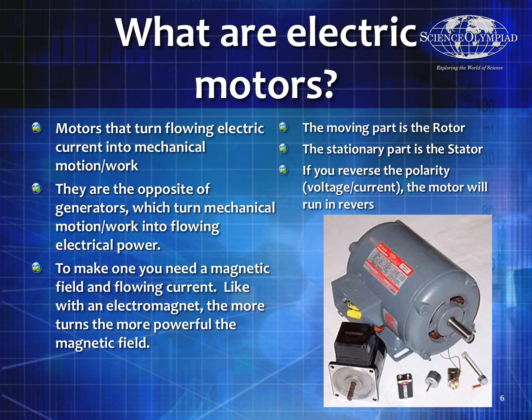Electric motors are pieces of equipment that turn electrical current into mechanical force or mechanical work. The current flowing around the internal solenoids creates a magnetic field, which then makes the stationary magnets push or pull the rotor and makes the rotor spin. The more current you provide, the faster the motor spins; the less current you provide, the slower the motor spins.